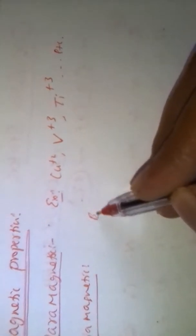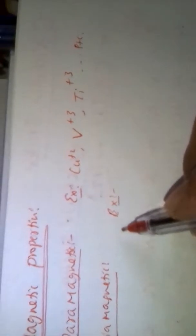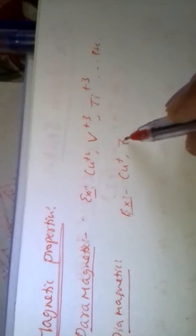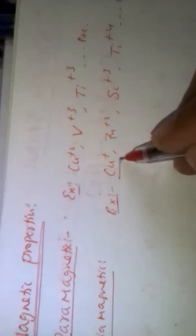Transition elements which do not contain unpaired electrons are examples of diamagnetic substances. Examples include Cu+, Zn2+, Scandium3+, Titanium4+, and so on. These do not contain unpaired electrons, so they are not attracted by the magnetic field.